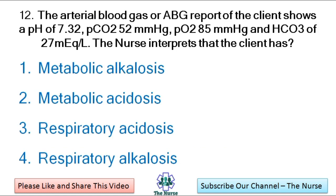Next question: The arterial blood gas (ABG) report of the client shows a pH of 7.32, pCO2 of 52 mmHg, pO2 of 85 mmHg, and bicarbonate of 27 mEq/L. The nurse interprets that the client has — metabolic alkalosis, metabolic acidosis, respiratory acidosis, or respiratory alkalosis.